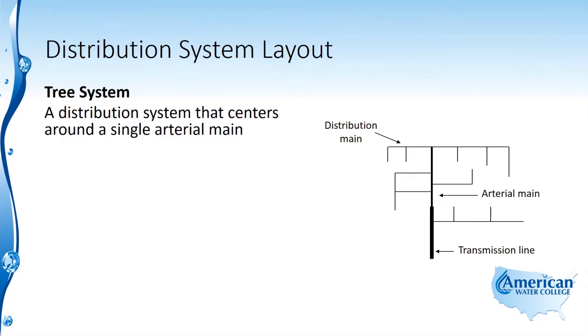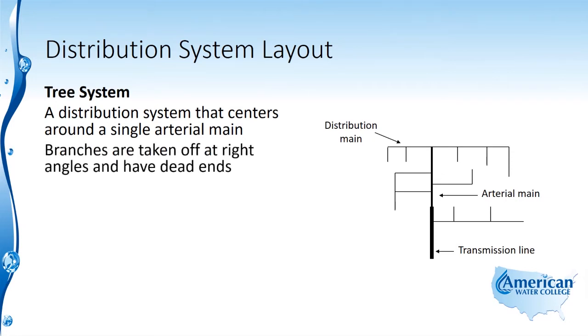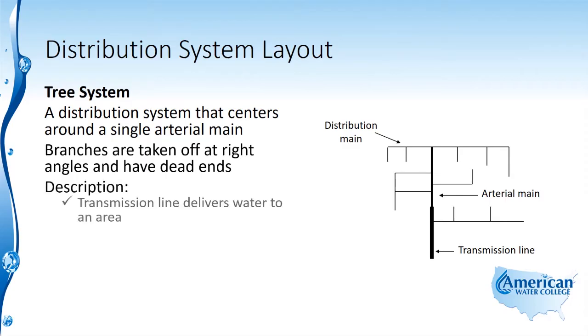The third type of system is the tree system. A tree system is a distribution system that centers around a single arterial main, and branches are taken off at right angles, and they have dead ends.